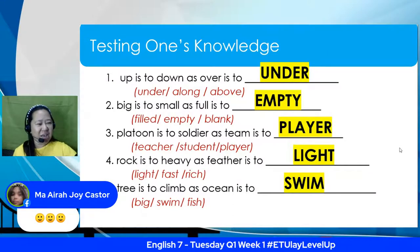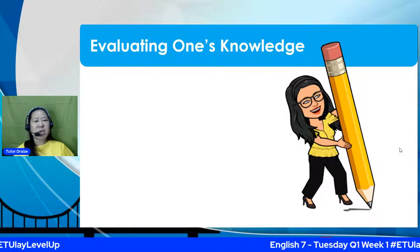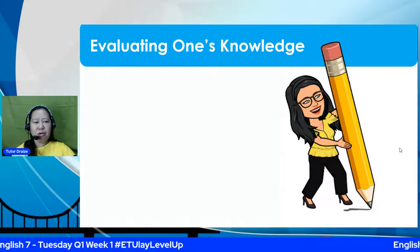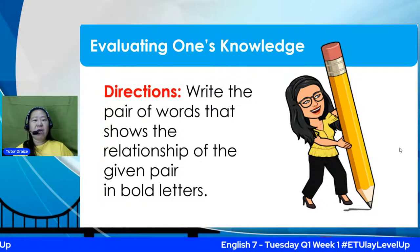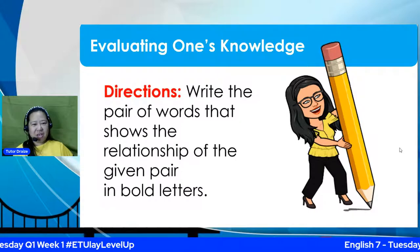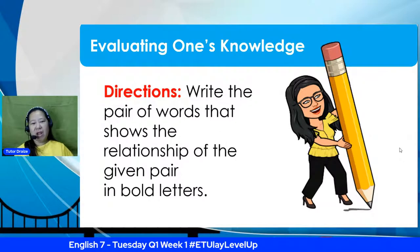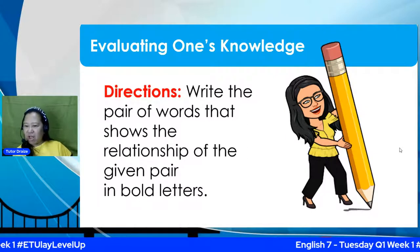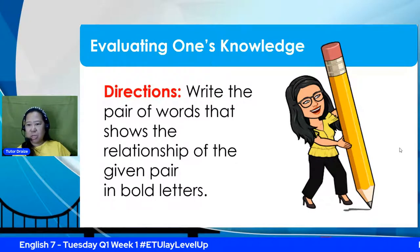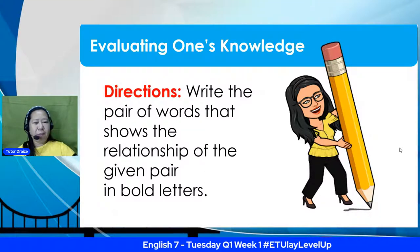Again, we're going to have five items for this task. Let us check if you really, really understood our lesson for this afternoon. Are you now a master of analogies? For this activity, you're going to write the pair of words that shows the relationship of the given pair in bold letters. Before we begin, let me greet Rogan Villaruelmi from Grade 2 Masinok, Mahada Out Elementary School — that's a very good advanced lesson! Let's now begin with item number one.